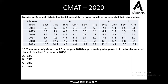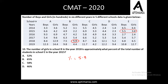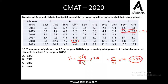Question number 10 is based on the same data. The number of girls in school B in the year 2018 is 5.9, which is approximately what percentage of the total number of students in school E in the year 2015? Total students in school E in 2015 is 5.5 + 3.6 = 9.1. So we compute (5.9 / 9.1) × 100 = 59/91 × 100, which is approximately 65%. For question number 10, option B, 65%, is the correct answer.